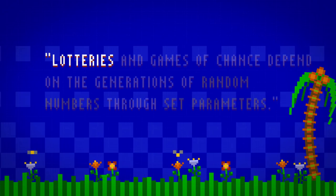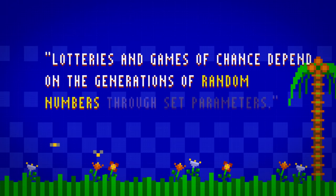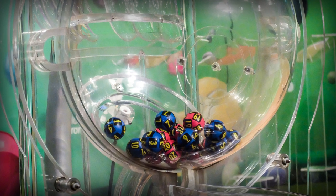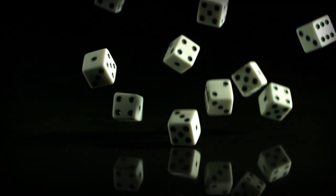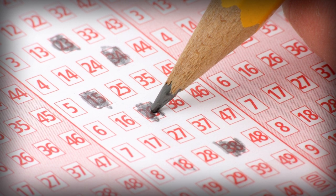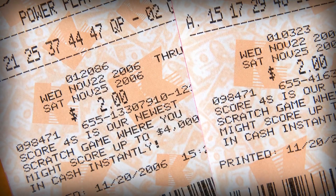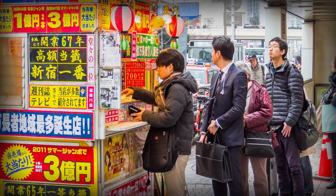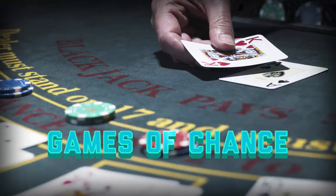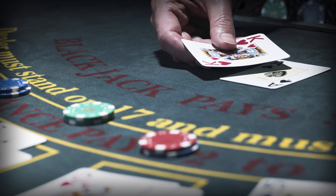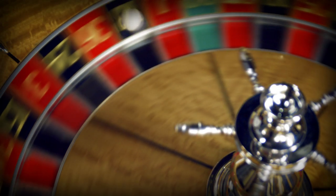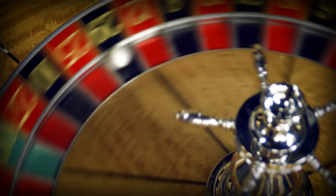Lotteries and games of chance have some things in common. According to the textbook on Internet Gaming Law, creatively titled Internet Gaming Law, lotteries and games of chance depend on the generation of random numbers through set parameters. At their most basic level, lotteries and casino games rely on a random number generator. That generator could be a drum full of numbers, like with a lottery, or it could be a deck of cards or a pair of dice, like in casino games. Lotteries are pretty simple — a player chooses a group of numbers, or has numbers assigned to them randomly, and wins if the matching numbers are spit out of the number generator. The lack of player agency in a lottery means it's not much like a game either. Games of chance are more interesting, because they rely on giving the player an illusion of control. In reality, a pair of dice, or roulette wheel, or a deck of cards is just as much a random number generator as a lottery drum.